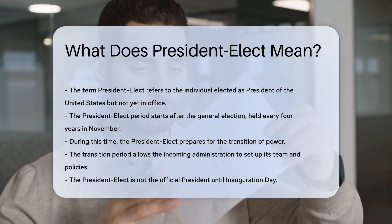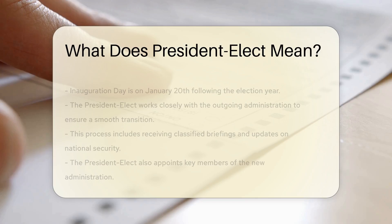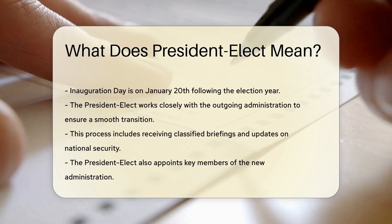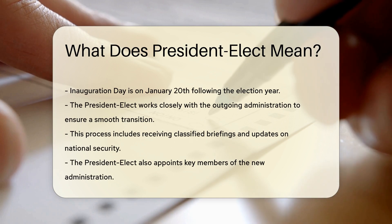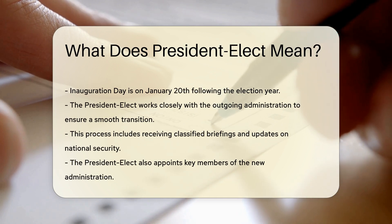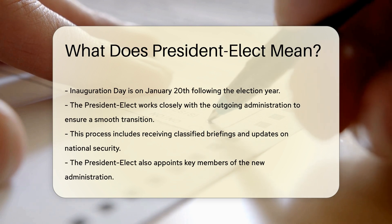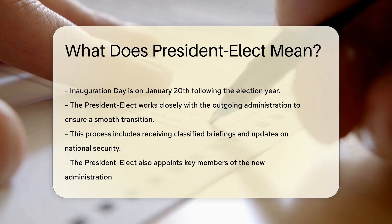The President-Elect is not yet the official president until Inauguration Day. Inauguration Day is on January 20th following the election year. The President-Elect works closely with the outgoing administration to ensure a smooth transition.